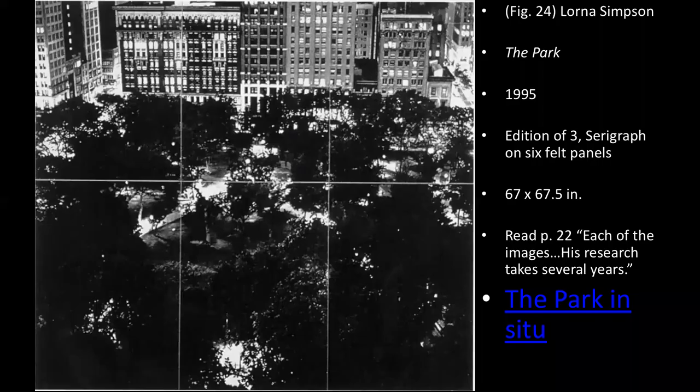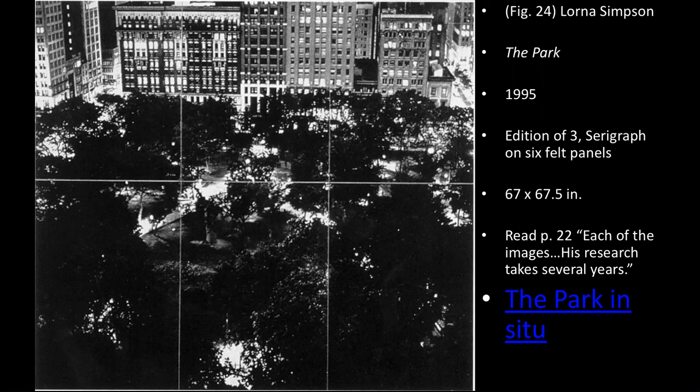Looking at our next piece called 'The Park' — as you can see this is a giant piece, a serigraph, which means a silk screen on six felt panels, so this would be quite huge. A good way to look at this particular piece is to show how it appears when it's displayed and exhibited.